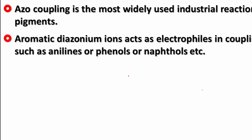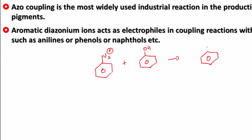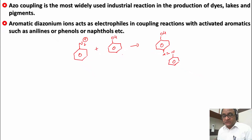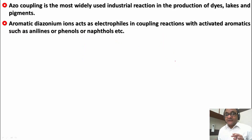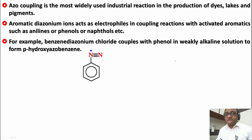What we have here is an aromatic diazonium ion, N2+, reacting with an activated ring. The activated rings have to be strongly activated rings like phenol, aniline, etc. So if we have a phenol, we are going to get an electrophilic aromatic substitution product. For example, if we take benzene diazonium chloride coupling with phenol in weakly alkaline solution, it forms para-hydroxy azobenzene. So we have the diazonium ion, the phenol, and this is the product formed.